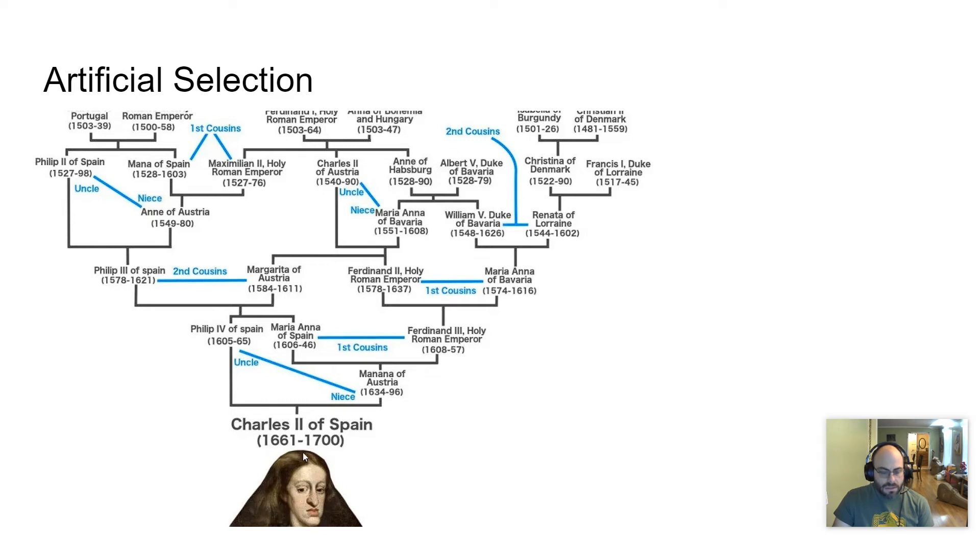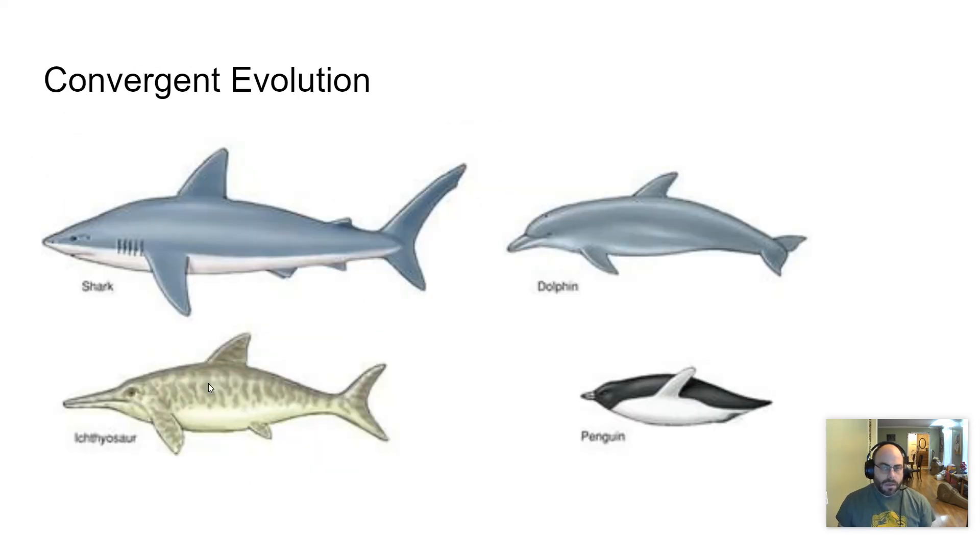And it all distills down to Charles II of Spain, who, you can see, didn't live very long, wasn't a highly functioning adult, but was the king of Spain. And he was the example of us artificially selecting traits, which is another way of saying inbreeding, which has never been a good thing for anybody because it brings out those bad traits. We'll talk more about this in a later video.